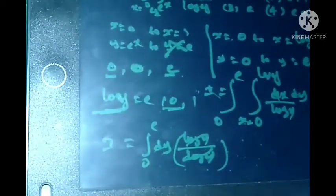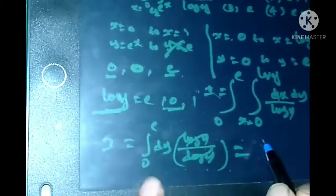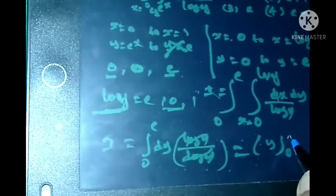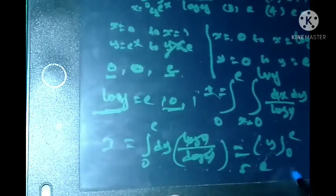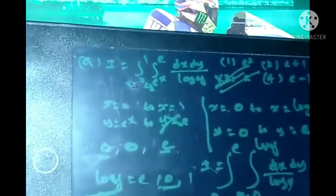After integration and taking the limits, this gets cancelled. After integration with respect to y, we get y from lower limit 0 to upper limit e. This is the required answer. Therefore, the correct answer is e, option 3 is the correct answer.